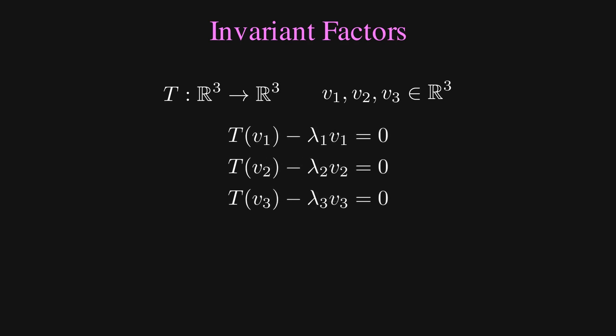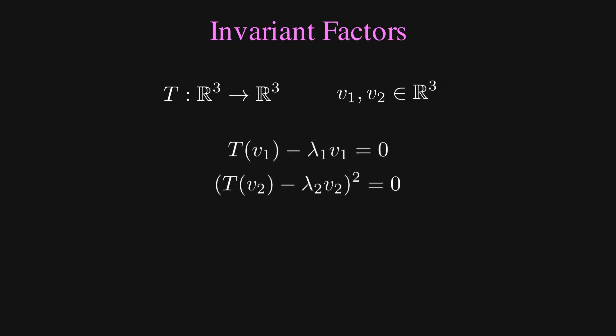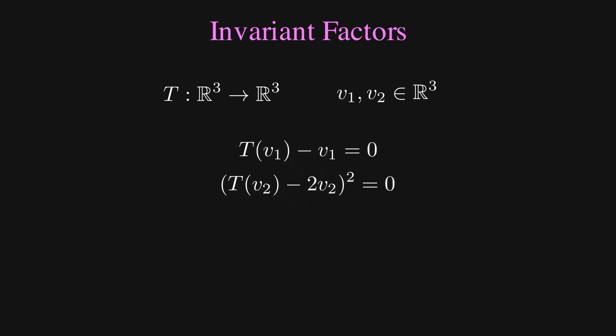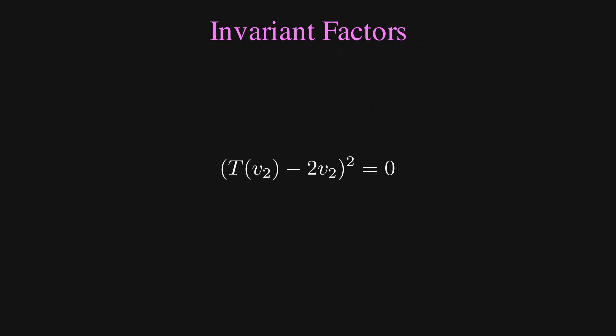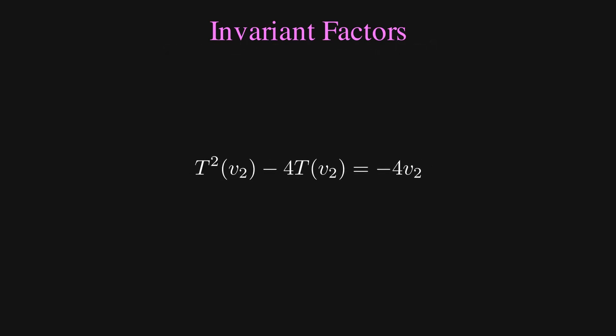In our undiagonalizable example, we have only two eigenvectors, as well as a more complicated equation that describes the invariance in the transformation. This means that our second eigenvector also satisfies this equation. We can even visually see that this is true.